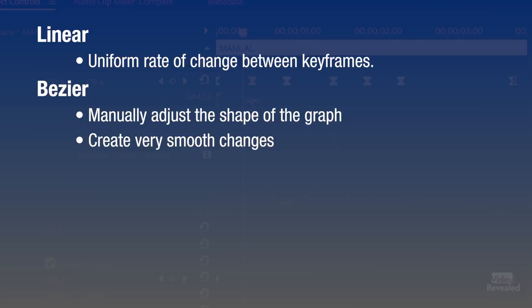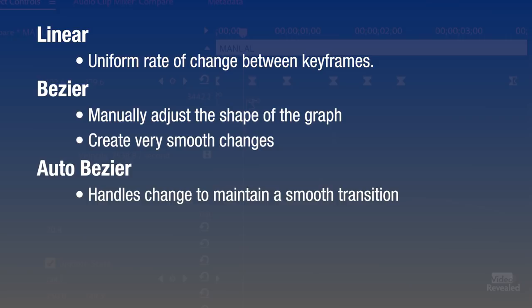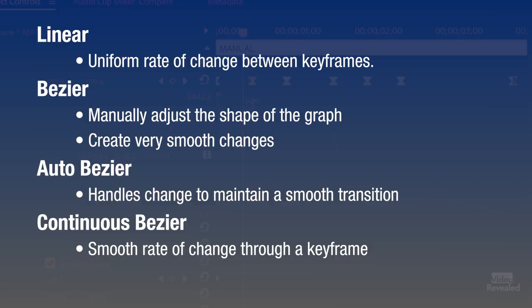Auto Bezier creates a smooth rate of change through a keyframe. As you change a keyframe's value, the Auto Bezier direction handles change to maintain a smooth transition. Continuous Bezier creates a smooth rate of change through a keyframe. However, unlike Auto Bezier interpolation method, continuous Bezier lets you adjust direction handles manually as you change the shape of a graph on either side of the keyframe.